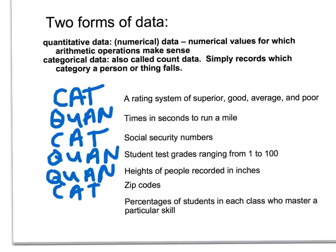Percentage of students in each class who master a particular skill — you can have a percentage that comes out to 0.5. For example, 3 out of 4 is 75%, and you could have 75.5%. So this would be quantitative in nature.